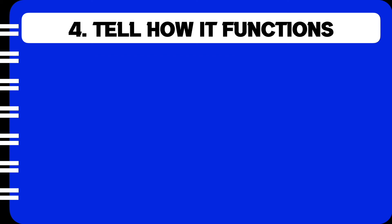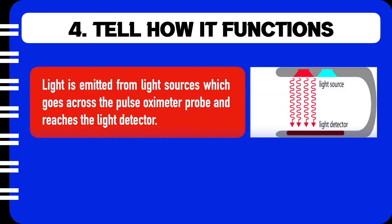Coming to the last part of a description, in this we are going to talk about how the oximeter functions. Now light is emitted from light sources which goes across the pulse oximeter probe and reaches the light detector which you can see at the bottom.